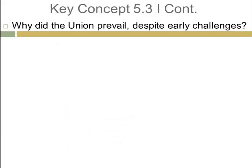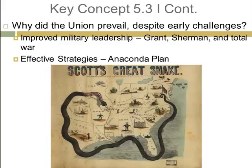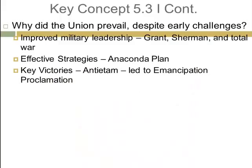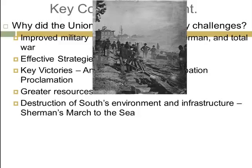Why did the Union prevail despite early challenges? The North was having a really hard time early on, but eventually they settled on improved military leadership under people like Grant and Sherman, and this idea of total war. Sherman instituted this. They had effective strategies like the Anaconda Plan, a blockade of the South all the way west of the Mississippi River and throughout the Atlantic Ocean. Key victories, including the Battle of Antietam, led to the Emancipation Proclamation. The North had greater resources — most of the factories, railroads, and manpower. The South's environment and infrastructure were destroyed, especially during Sherman's march to the sea, where he focused on destroying the South's railroads.